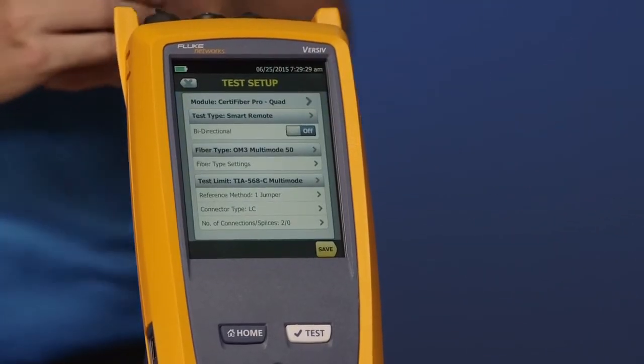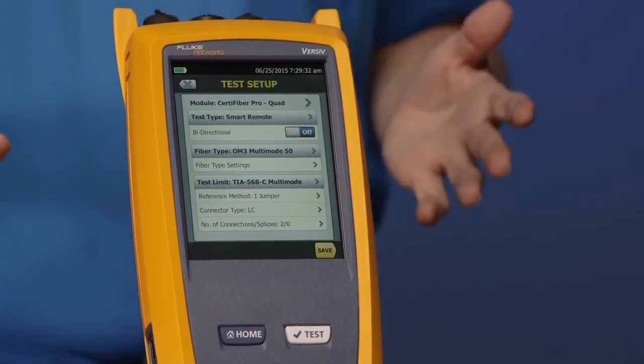We're going to leave it in Smart Remote. So Amanda, tap Smart Remote for me. That's fantastic. Looking down on the next option here, we have bi-directional. Now this can be an emotive decision. What I would say here is, look at your test specification. If your test specification calls out bi-directional, turn this on. Just be aware that none of the cabling standards in ISO or TIA require bi-directional testing. But your vendor may or your consultant may. So always look to your test specification.